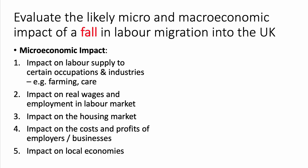What about the micro-macro distinction? This is the key to thinking synoptically. Show the examiners you've got a good range of points on both the micro and macro side. Thinking about a fall in migration, the micro impact could include the effect on labour supply to certain occupations and sectors — for example, a possible decline in the number of people from EU countries coming to work in farming, social care, or the NHS.